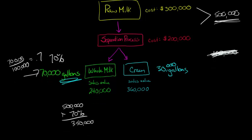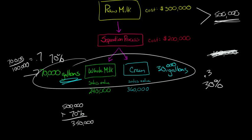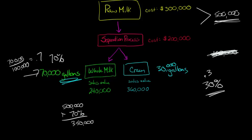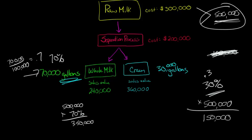Now we do the same thing with cream. We take the 500,000 in joint costs, but now it's the 30,000 gallons divided by 100,000 total gallons. So that's 0.3 or 30%. So of all the gallons that we've created here, the 30,000 out of 100,000 is 30%, so the cream is 30% of all the gallons. So now we take 30% times the 500,000 in joint costs, and that's going to give us $150,000 of joint costs. So the joint costs for the whole milk are $350,000 and the joint costs for the cream are $150,000.